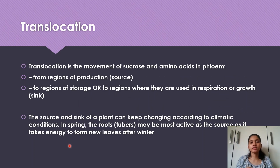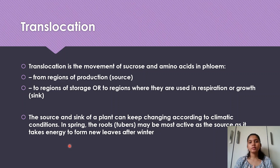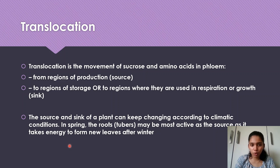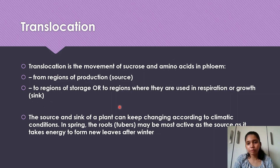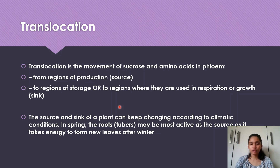Translocation is the movement of sucrose and amino acids in the phloem from the region of production (the source) to regions of storage, or to regions where they are used in respiration or growth (the sink). It is movement from source to sink. You are required to give this whole answer for full marks — it's easy to memorize if you read it five times and write it down.